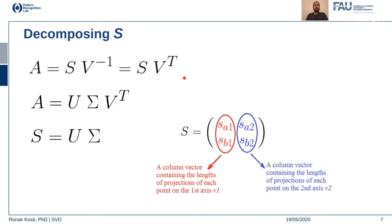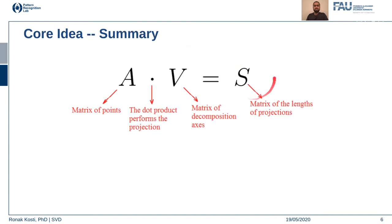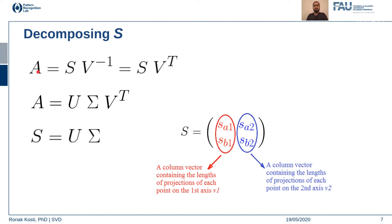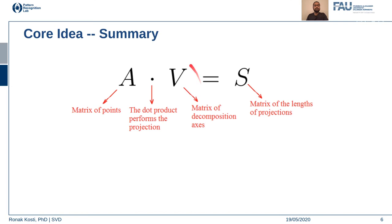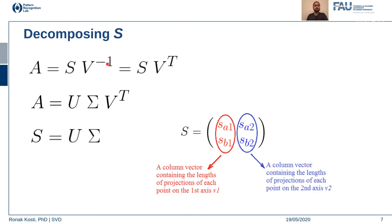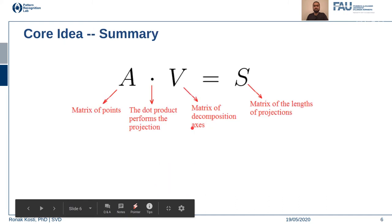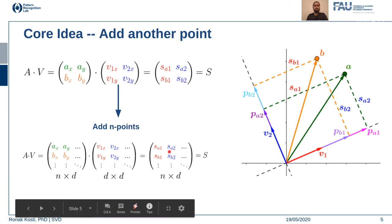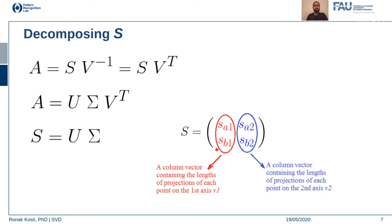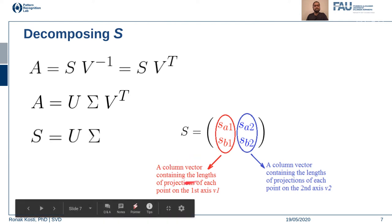Now let's start decomposing S. We already know that V is an orthogonal matrix, so when you multiply V by its inverse you get its transpose. This gives an equivalent representation, which is actually the standard representation of singular value decomposition: S = U · Sigma. We want to look at how we construct U · Sigma from S. S is a matrix of component values of A vectors along the directions of V, and each column represents the projection lengths of each point on a given axis.